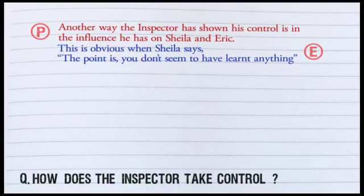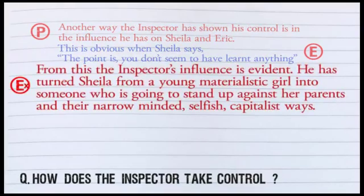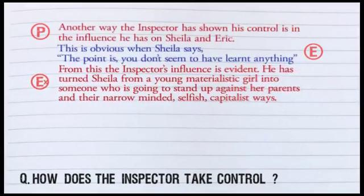This point and evidence together probably get me a low D. I can make a point and I can support it with evidence, however I haven't explained it. So now I need to start doing that. From this, the inspector's influence is evident. He has turned Sheila from a young, materialistic girl to someone who is going to stand up against her parents and their narrow-minded, selfish, capitalist ways. I've summed up my explanation there and that should get me a low C, just from my understanding.